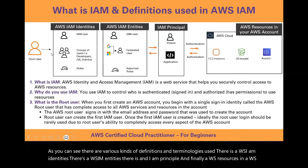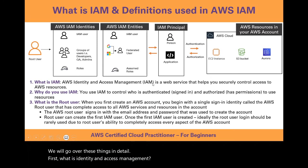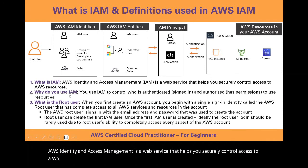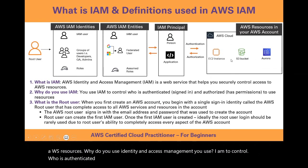First, what is Identity and Access Management? AWS Identity and Access Management is a web service that helps you securely control access to AWS resources. You use IAM to control who is authenticated and authorized to use AWS resources.